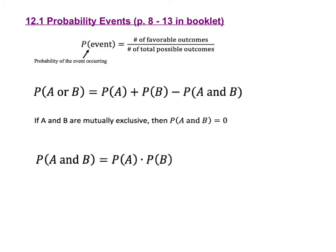We're going to review the lessons in order. The questions on the test will also be in a similar order, starting with 12.1 and ending with 12.5. The first lesson in chapter 12 was on probability events, and this is on pages 8 through 13 in your booklet.